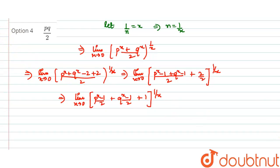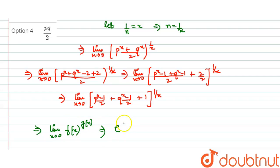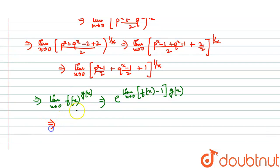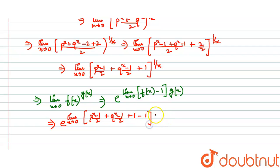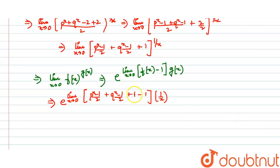There is a formula: if we have limit x tends to 0 of f(x) raised to g(x), this can be written as e raised to the power limit x tends to 0 of (f(x) minus 1) multiplied by g(x). Using this formula, the inside of the bracket is our f(x) and 1 by x is g(x). So we get e raised to the power limit x tends to 0 of [(p^x minus 1)/2 + (q^x minus 1)/2 + 1 minus 1] times 1 by x. The plus 1 and minus 1 cancel out.